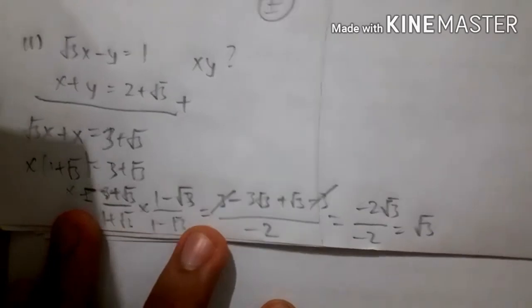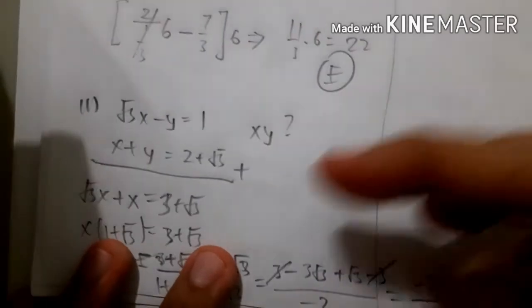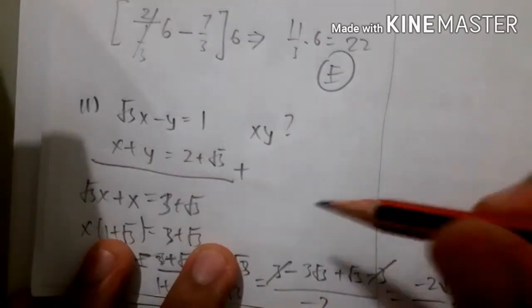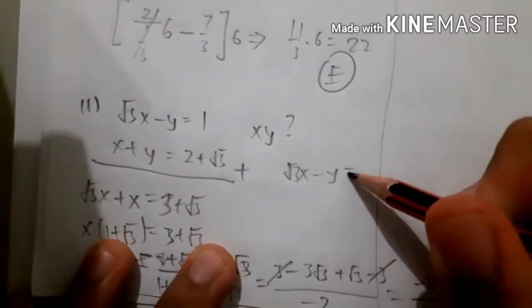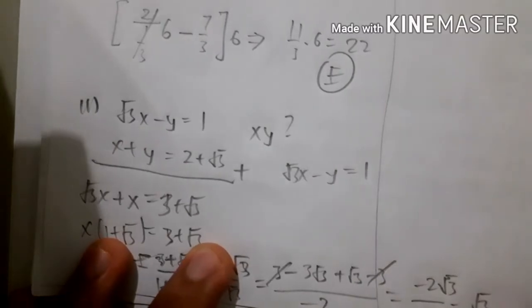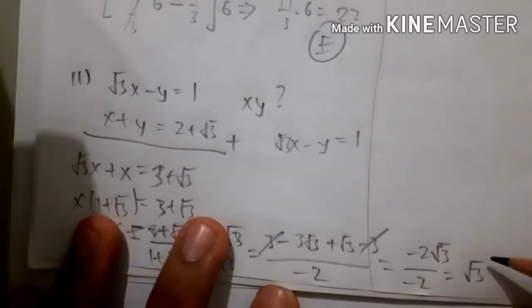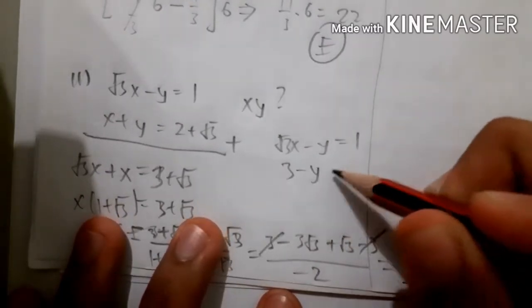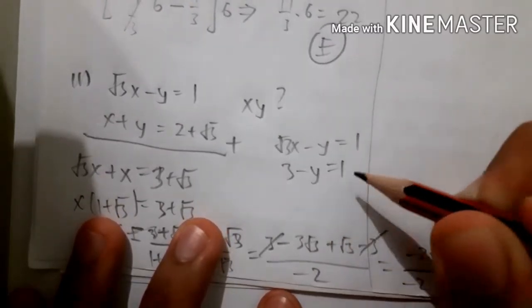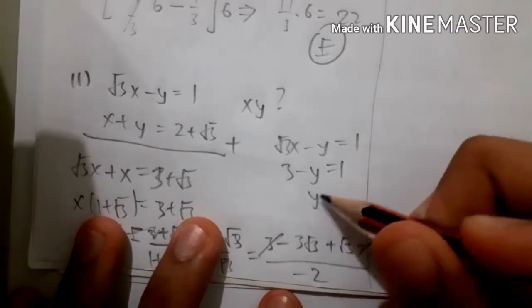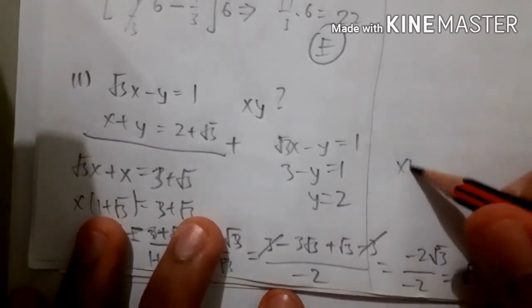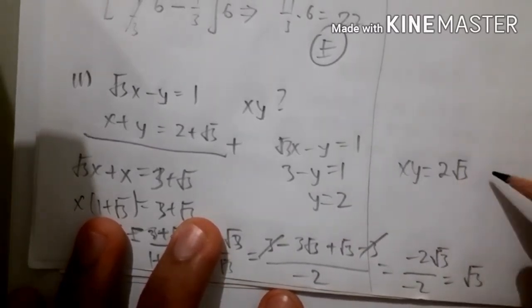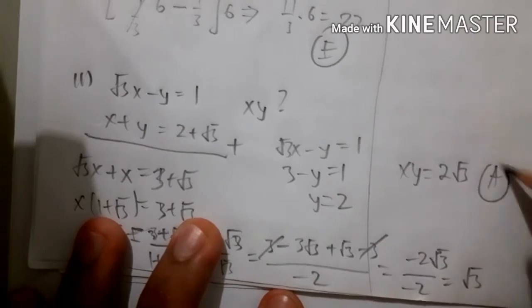Now substitute x into one of the equations: root 3·x minus y equals 1. We know x is root 3, so that is 3 minus y equals 1, giving y equals 2. Therefore x·y is 2·root 3 — the answer is A.